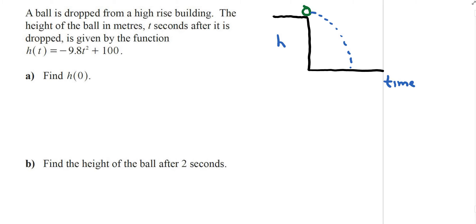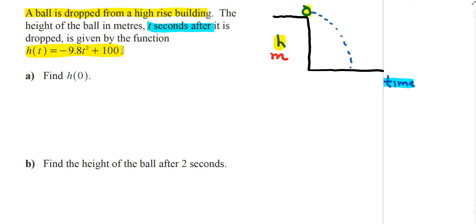This is part 3 of the homework video guide for section 5.5, question 16. I have a word problem where a ball is being dropped from a high-rise building. The height of the ball is measured in meters, and the x-axis is measured in time in seconds. This relationship is modeled by a function, and the first question asks me to find the height when time equals 0.